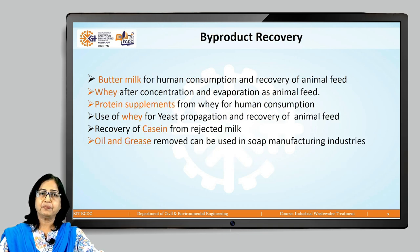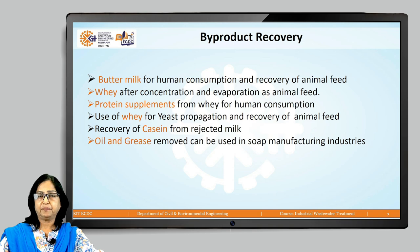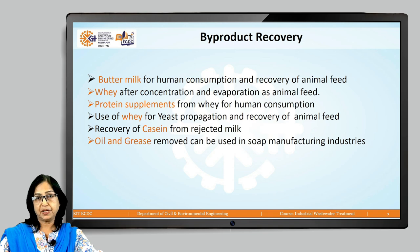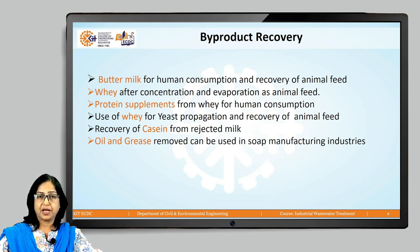The dairy industry also offers tremendous scope for by-product recovery. First, buttermilk recovery: once butter is separated, the remaining liquid has high nutritional value, can be used for human consumption, and is very popular in India; it can also be used as animal feed. Next is recovery of protein from whey. Whey protein is very popular, especially for people who do heavy exercise and use it as a protein supplement.